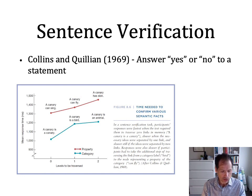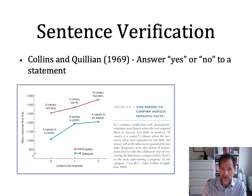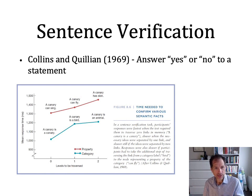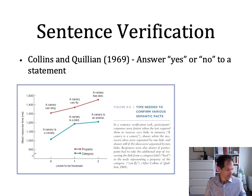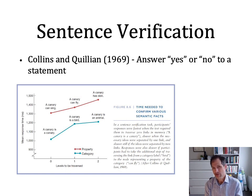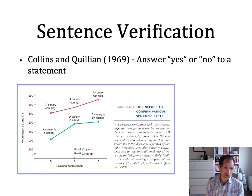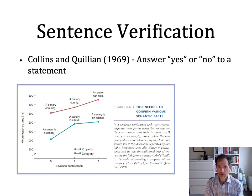You can also answer questions about the category the object is in. A canary is a canary — yes. A canary is a bird — yes. A canary is an animal — yes. A canary is a fish — no. These are sentence verifications: a simple statement with a yes or no answer. But we're not really interested in whether you say yes or no. We assume you know that canaries can fly. What we're interested in is how quickly you can say yes.